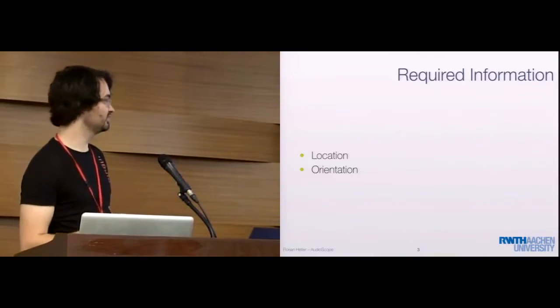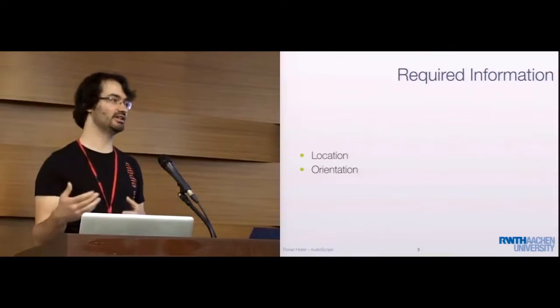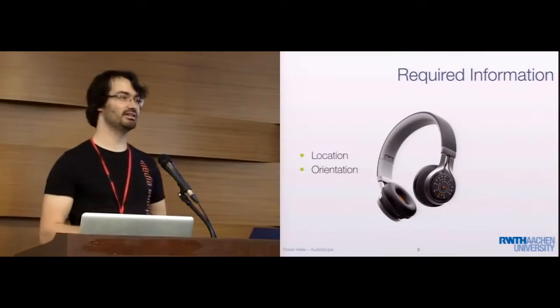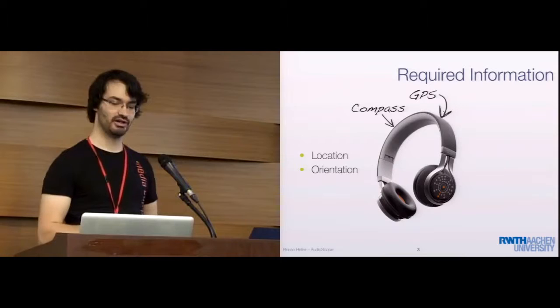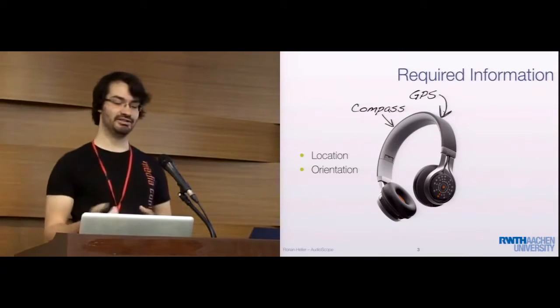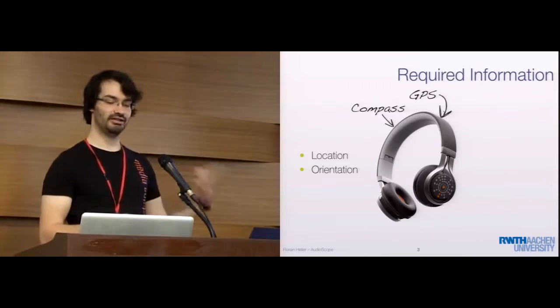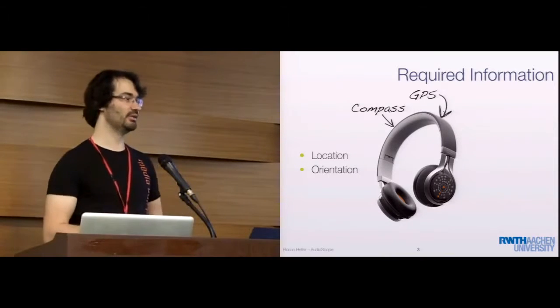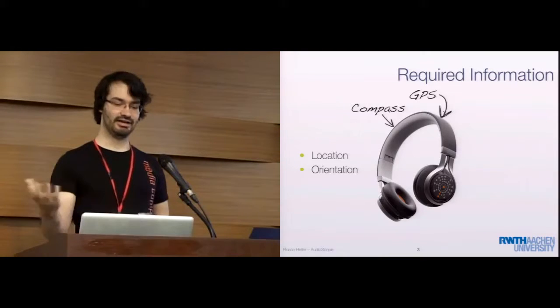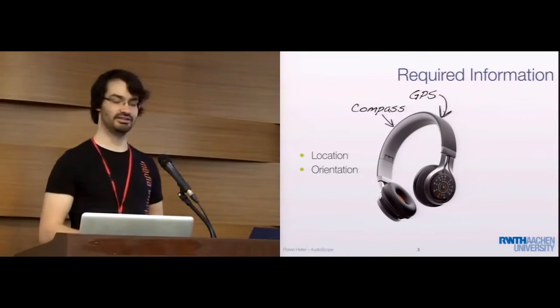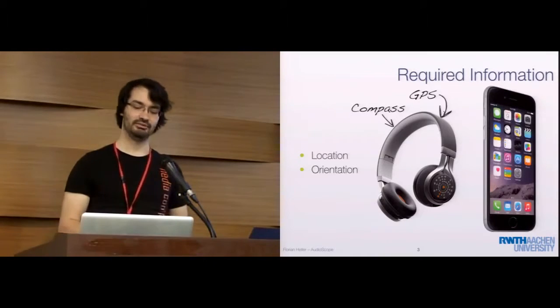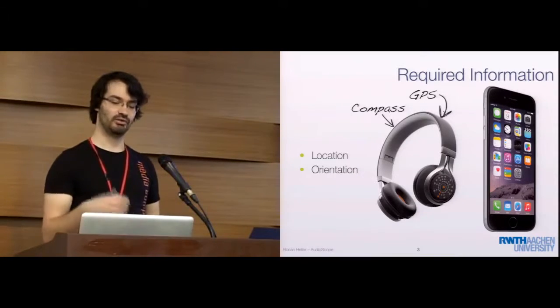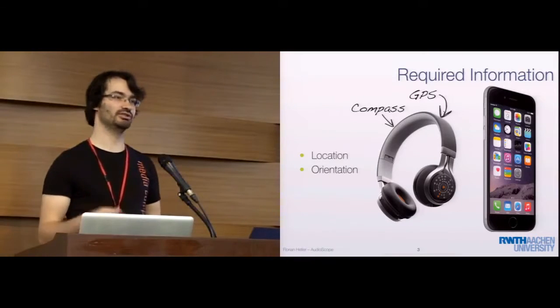What kind of information do we need to create such an experience? Basically, we need location and orientation. There are tools like this intelligent headset, which is specially designed for this purpose. It comes with a compass and GPS, but it's pretty expensive. If you're in a situation like a museum, you need to buy lots of these, maintain them, charge them, and pair them to your smartphone. So it's quite complicated and expensive. On the other hand, we all carry a device with us that already provides this information, which is the smartphone. We want to know if we can achieve a similar result for mobile audio augmented reality applications using the smartphone, which would reduce the deployment of such a system to a simple app download.